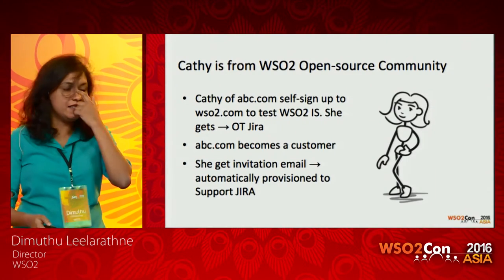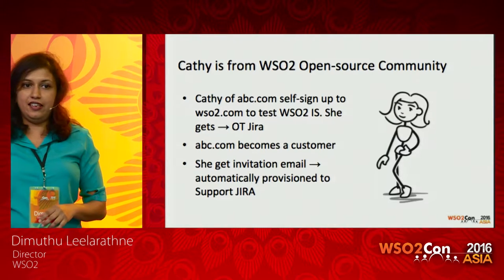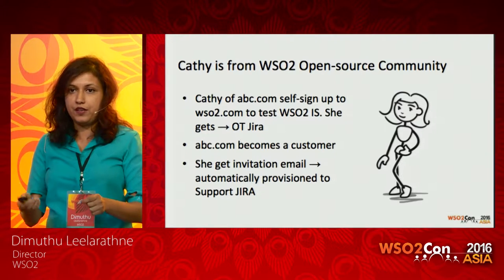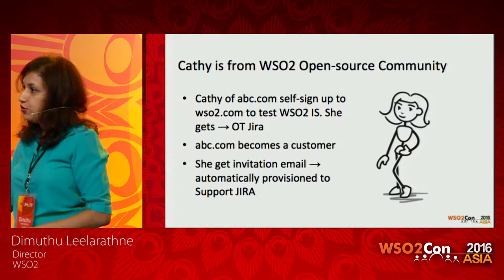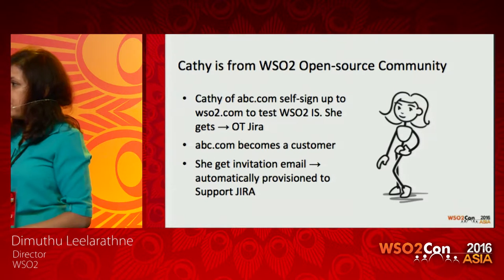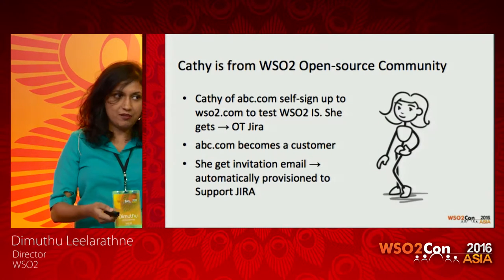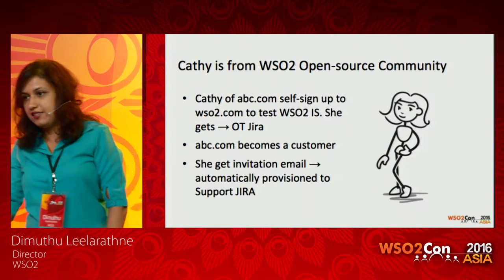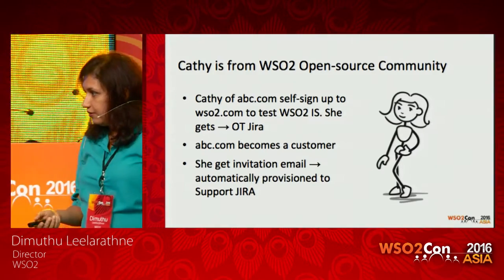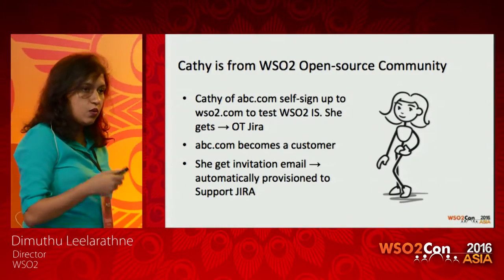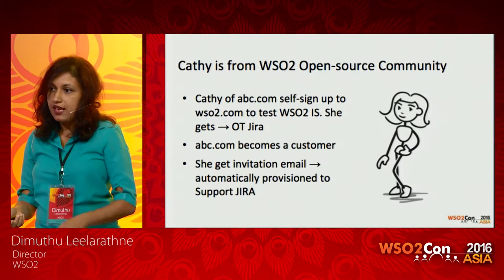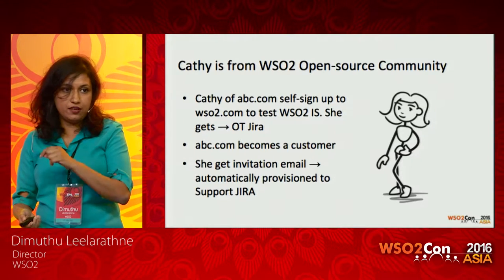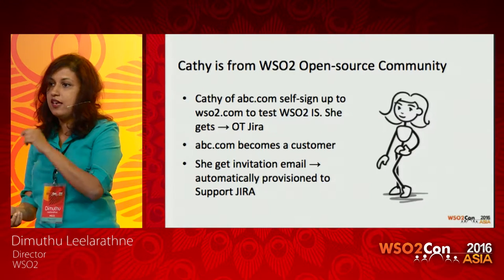Now let's look at Cathy. She belongs to another category — she's an open source developer from abcg.com. She's interested in WSO2 products, so she goes to Oxygen Tank and signs up at WSO2.com, giving her an Oxygen Tank sign-in to Jira so she can create tickets. When she becomes a customer, she gets an invitation email — clicking it calls the underlying API and provisions her into Support Jira as a client under the abc.com project, so she can create support tickets against WSO2 employees.